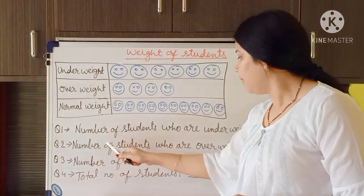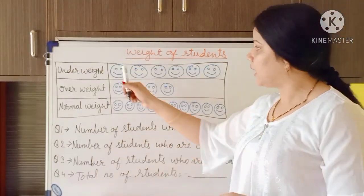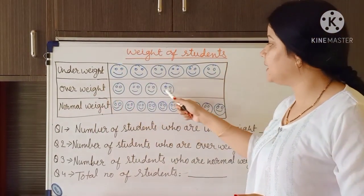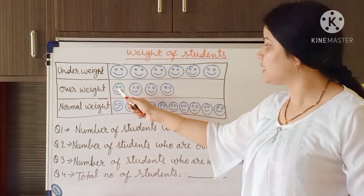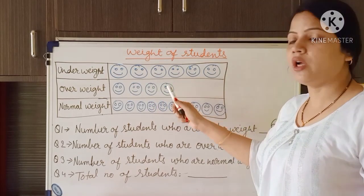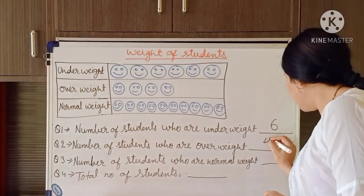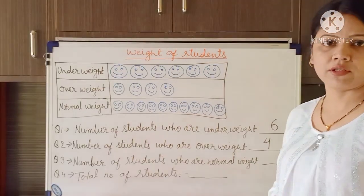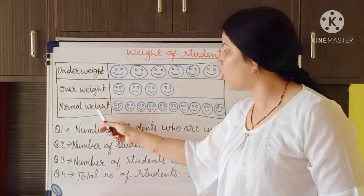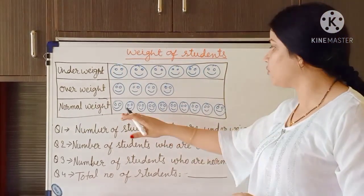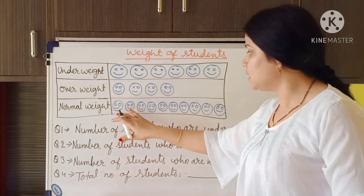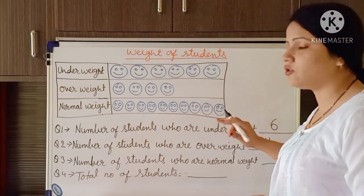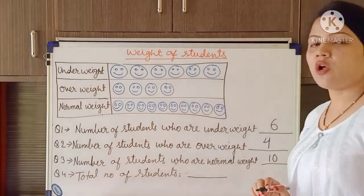The second question is the number of students who are overweight. We look for where overweight is written and count: 1, 2, 3, 4 — four students are overweight. The third question is the number of students who are normal weight. We count the symbols: 1, 2, 3, 4, 5, 6, 7, 8, 9, 10 — ten students are of normal weight.